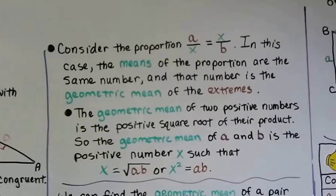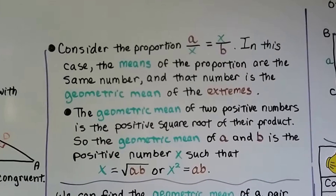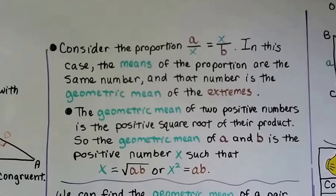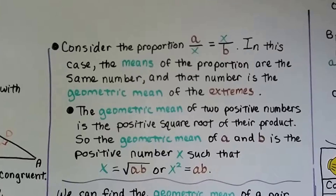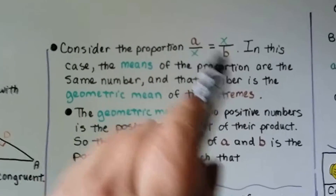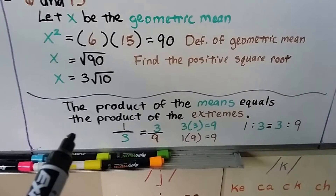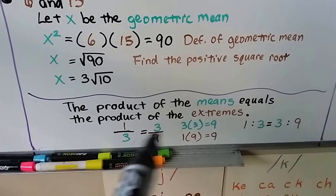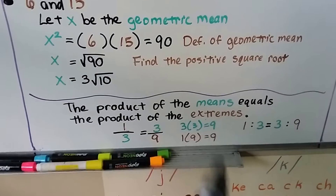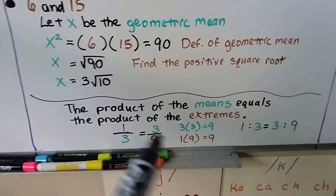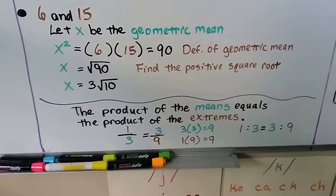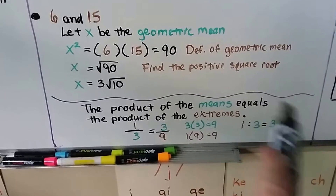Consider the proportion A over X equals X over B. The means of the proportion are the same number, and that number is the geometric mean of the extremes. The means are the inside terms, the extremes are the outside terms. From Algebra 1, the product of the means equals the product of the extremes — for example, in one-third equals three-ninths, three times three equals nine, and one times nine equals nine.